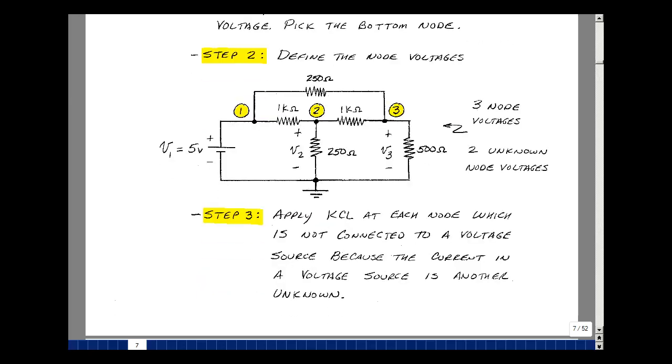The third step is to apply Kirchhoff's current law at each node in our circuit, but if we sum the currents at this voltage source node, the current that comes out of here is another unknown. Let's not pick that node. Since I only need to have two equations to solve this, I'll pick the nodes that don't have a voltage source hooked up to it.